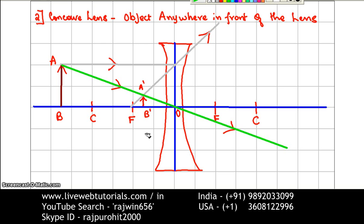Now you can put down the characteristics of the image. First, nature: it is virtual and erect. Its position is between the focus and the optical center, on the same side of the lens as the object. For size, comparing with the object, you can see the image is smaller, so the size of the image is diminished.